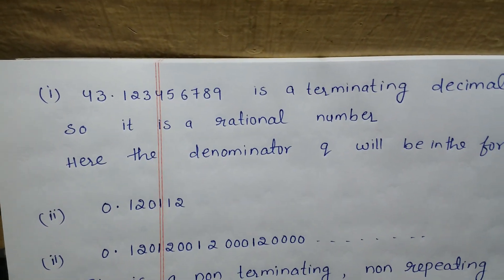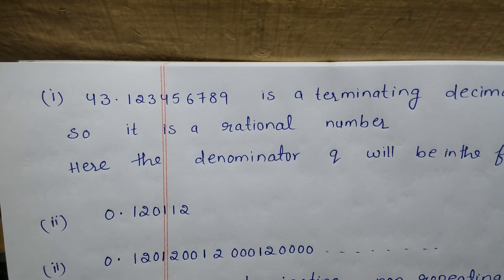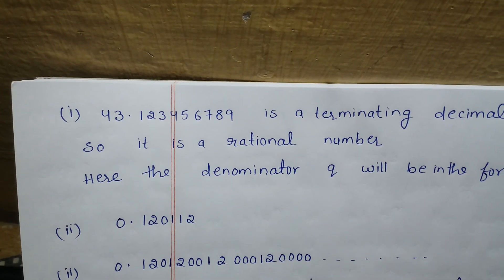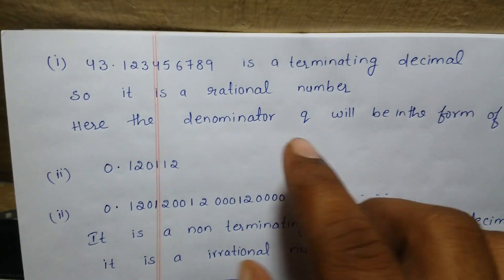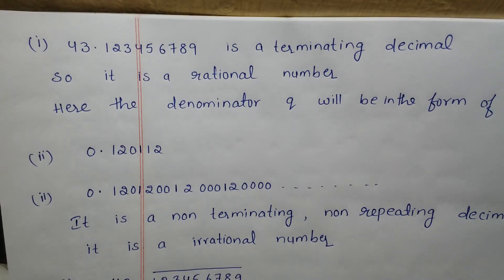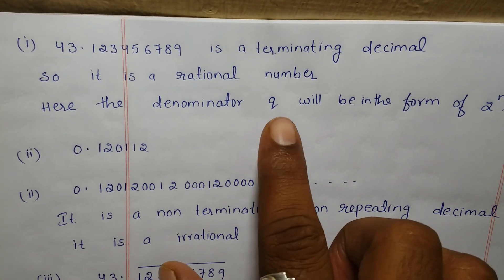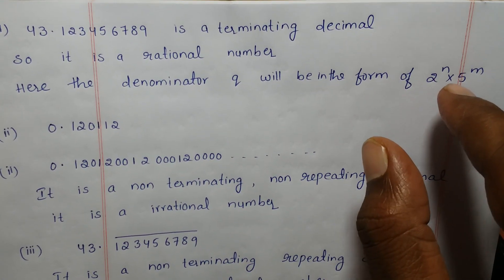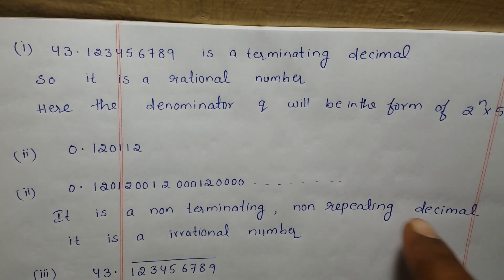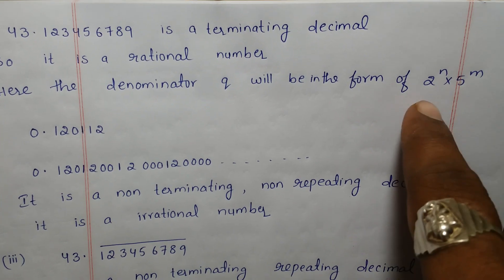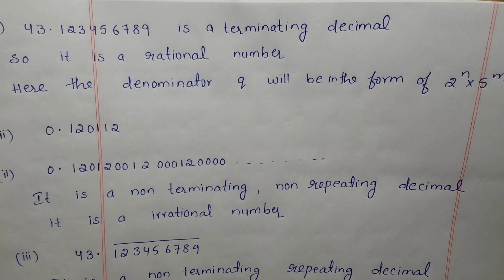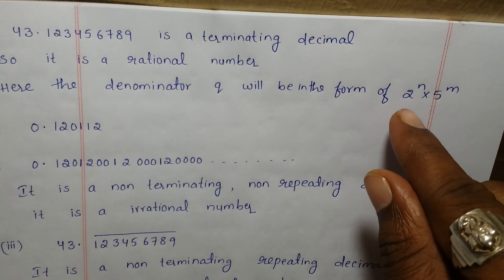The first question is 43.123456789. It is not continuing — it is ending at 9. So it is a terminating decimal, and therefore it is a rational number. All terminating decimals are rational numbers. Here the denominator q will be in the form of 2 to the power of n into 5 to the power of m. So the prime factors of q are nothing but 2 and 5.